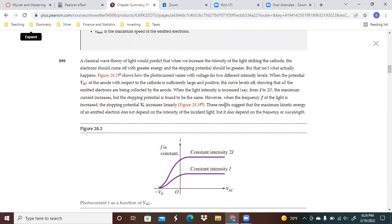A classical wave theory of light would predict that when we increase the intensity of the light striking the cathode, the electrons should come off with greater energy and the stopping potential should be greater. That's not what you see. This shows how the photocurrent varies with voltage for two different intensity levels. When the potential of the anode with respect to the cathode is sufficiently large and positive, current levels off, showing that all of the emitted electrons are being collected by the anode. When the light intensity is increased from I to 2I, the maximum current increases, but the stopping potential is found to be the same. But when the frequency of the light is increased, the stopping potential increases linearly. These results suggest the maximum kinetic energy of the emitted electron does not depend on the intensity of the light, but it does depend on the frequency of the wavelength.